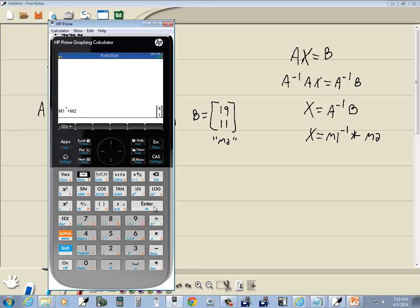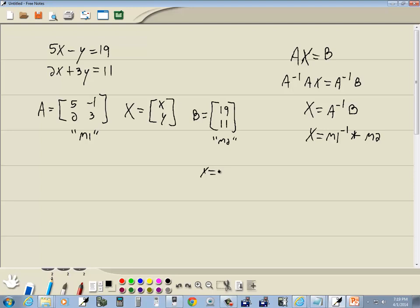And what you come back with is your answers. So x is 4, and y is 1. So x equals 4, and y equals 1. Or you could simply write it as 4, 1.